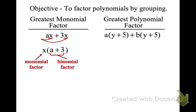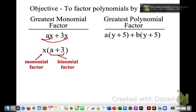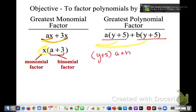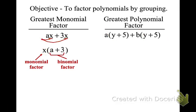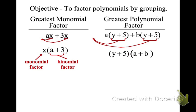Here I have a binomial in common. When I factor that out, I can take the whole binomial out, because both terms have a binomial of y plus 5. I pulled it out once and only wrote it once. So I'm going to pull out that common factor y plus 5, and then what we're left with is a plus b. Everything else that's left goes in the other parenthesis. That is a binomial factor, and the other one is a binomial factor now.